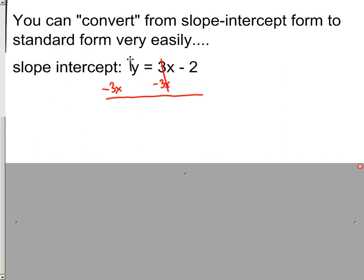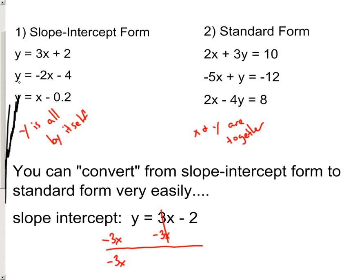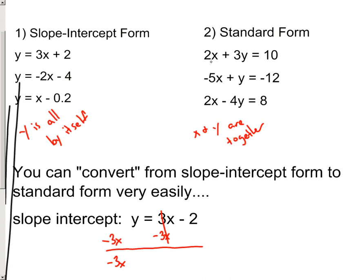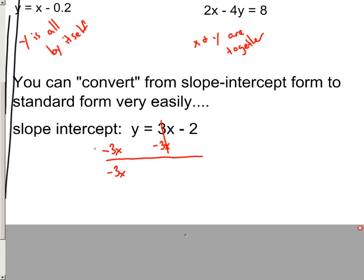And look, you can absolutely put a 1 in front of that y, but you've got to ask yourself: Are these two terms like terms? And they're not, because this has an x and this has a y. So I can't combine these two together. So I will just drop my minus 3x straight down, because when we're talking about making it into a standard form equation, that x has to come before your y.